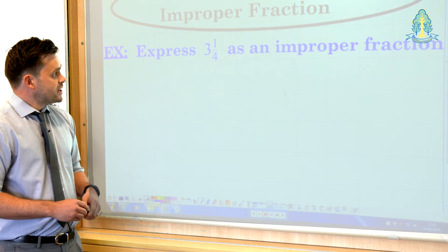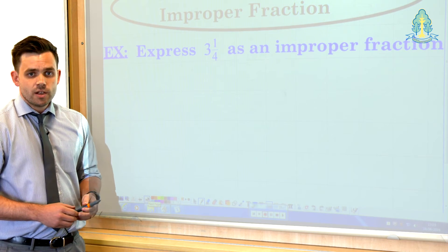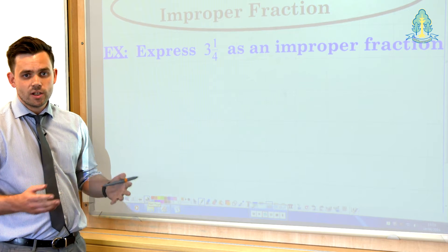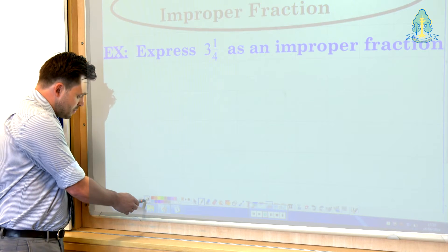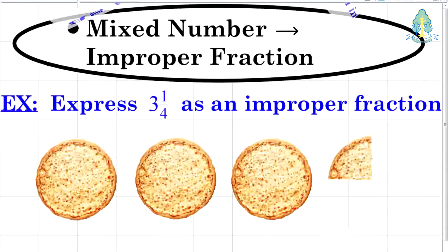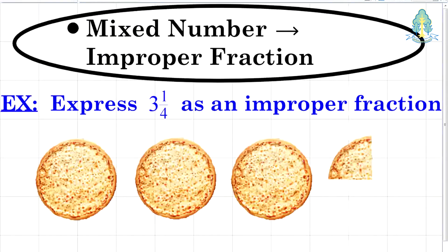First example, express three and a quarter as an improper fraction. If I was introducing this to the pupils I would ask them to visualize or draw a representation of three and one quarter, for example three whole pizzas and a quarter slice. The pupils can then take their drawing and split it into the relevant fractions, quarters in this case, and then count the fractions up.